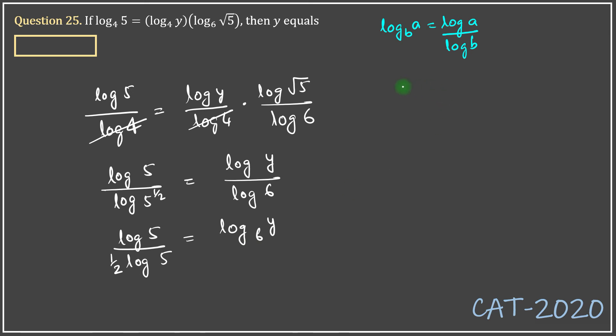Log 5 cancels log 5. 1 over 1/2 equals 2. So 2 equals log y to the base 6.